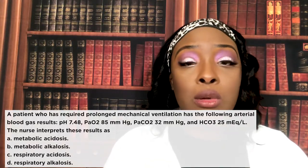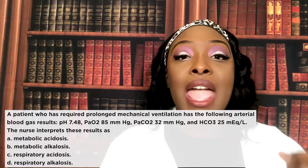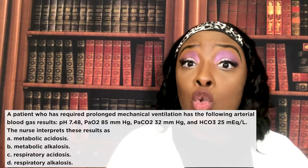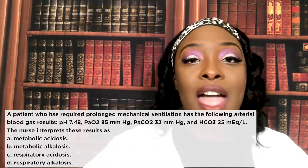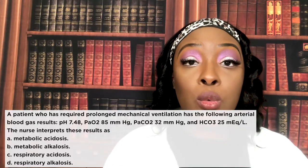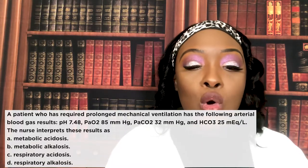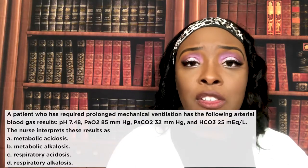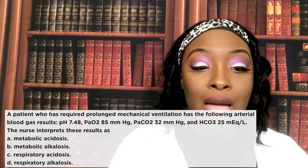After identifying alkalosis from the pH, look at what else is out of range. If the CO2 is out of range, it's respiratory; if the bicarb is out of range, it's metabolic. The CO2 is 32 — normal range is 35 to 45. Less than 35 means it's out of range on the low side. The bicarb is 25, which is within normal range (22 to 26). So the only value out of range besides pH is CO2, confirming this is respiratory alkalosis.